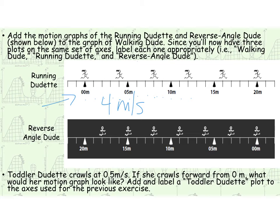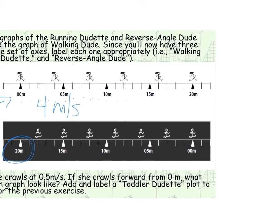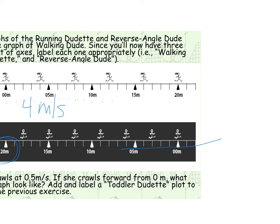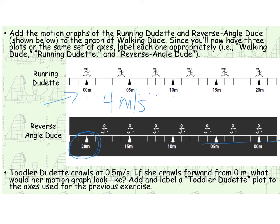Now reverse angle dude here looks like he is starting at 20 and then going back to the origin. So notice here this doesn't say negative 20, it says 20. So it literally means like flipping that first graph. And then if you look at his velocity, you'll see he goes 1, 2, 3 meters, so it looks like he is going 3 meters per second. But he's going in the opposite direction, so his slope is going to be negative. So let's go add these two guys to our graph.